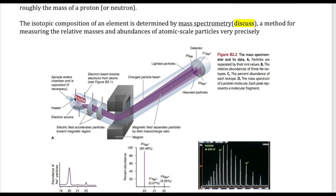Now let's talk about how the mass spectrometer works. If you have a sample of neon or some other element, and if it's not already a gas, you heat it. Once it's a gas, the sample goes through a chamber where it gets hit by an electron beam. This causes the particles in the sample to be ionized. What's then traveling through the instrument are the cations — the positively charged species of whatever sample you have.